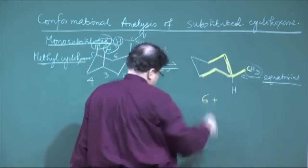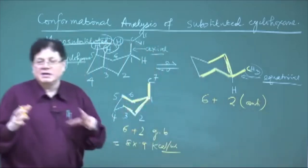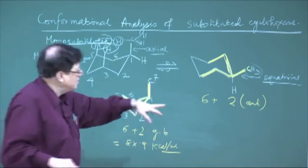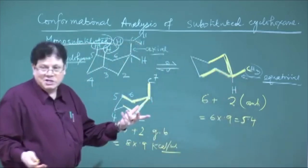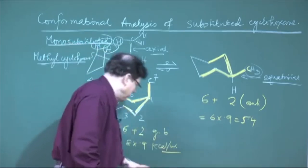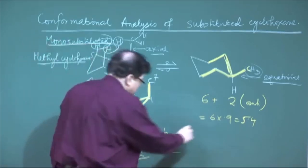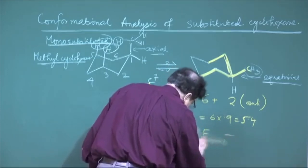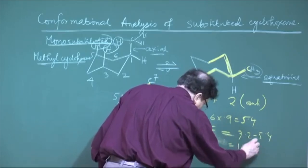For the equatorial-methyl conformer, the 2 extra butane units are now in the anti conformation. So you still have 6 gauche butane units plus 2 anti butane units, giving 6 × 0.9 = 5.4 kcal/mol — the same energy as plain cyclohexane, with no additional interaction. Therefore, ΔE between axial and equatorial = 7.2 − 5.4 = 1.8 kcal/mol.